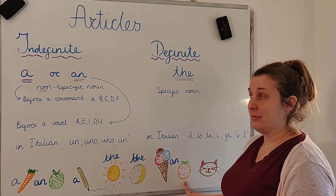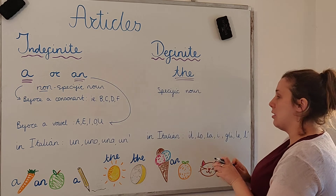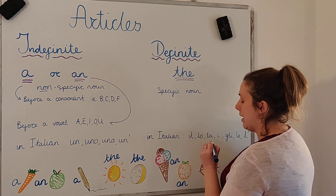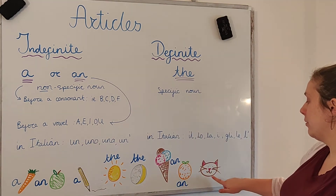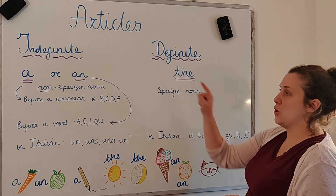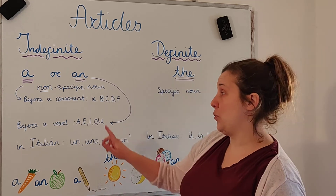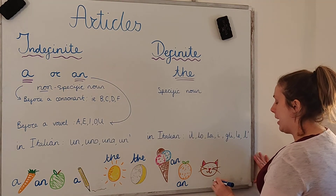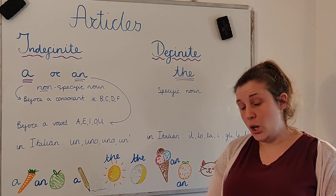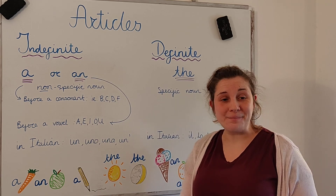Orange. Is it definite or indefinite? And does it start with a consonant or a vowel? It starts with a vowel. So, AN. An orange. How about this? Specific or non-specific? Non-specific, so it's indefinite. Does it start with a consonant or does it start with a vowel? Cat — C. So, A. A cat. I'm going to send you some work so you can practice putting the correct article in front of different words and in different phrases. If there's any problems, let me know. Bye, thank you.